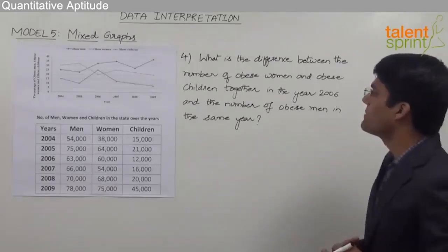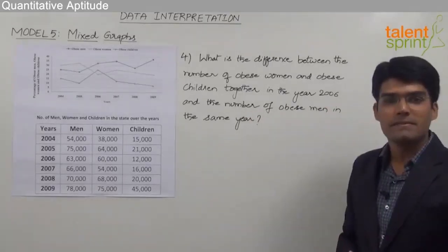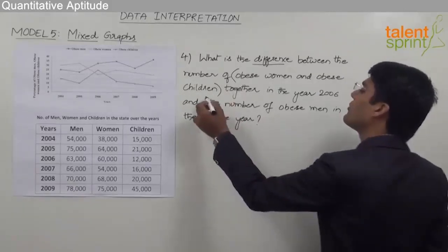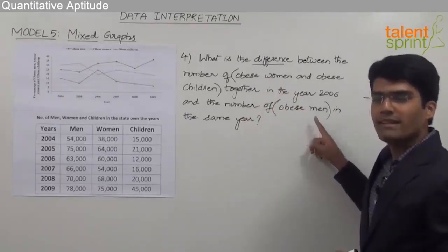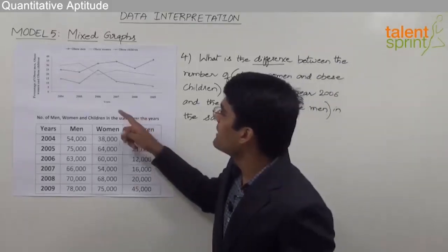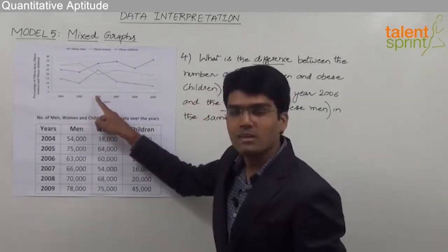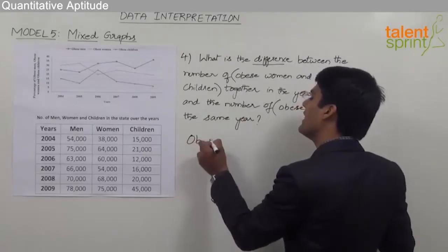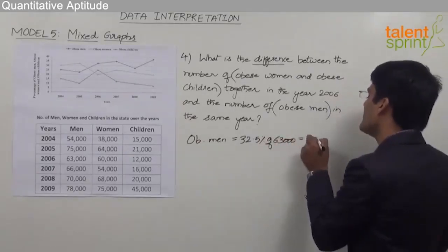The next question asks for the difference between the number of obese women and obese children together and the number of obese men in 2006. We first find obese men, women, and children in 2006. The percentage of obese men in 2006 is exactly between 30 and 35, so 32.5%. With total men of 63,000, obese men equals 32.5% of 63,000, which comes out to 20,475.